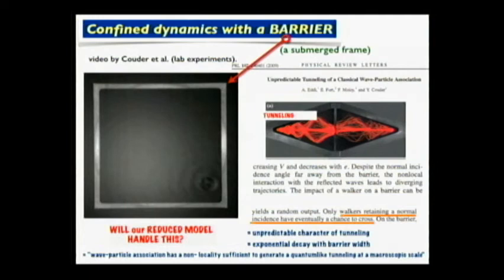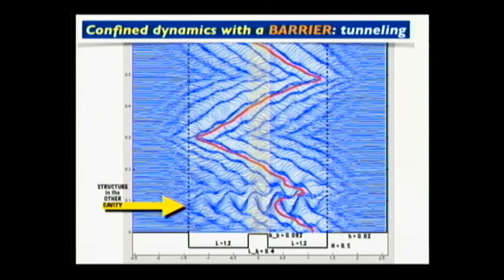Yves Couder has this paper. Look at the droplet confined by this submerged frame trying to escape. It goes around, revisits the same spot. Suddenly something happens - not well understood - it escapes. It's a bit like a tunneling effect. They have this paper studying tunneling. Will our reduced model handle this? With this 1D model, I can do two cavities. The droplet in this cavity escapes, goes to the other one. Here it escapes back.